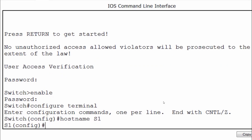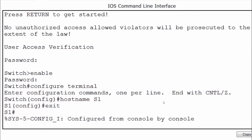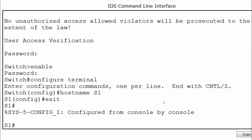To save the configuration on the switch, I'll go back to privileged exec mode by typing exit and pressing enter. From privileged exec mode, I put in the command copy running-config startup-config. This command means copy the running configuration to the startup configuration file.